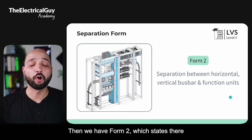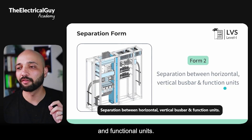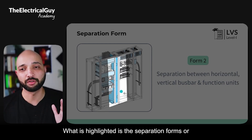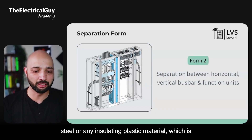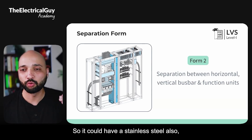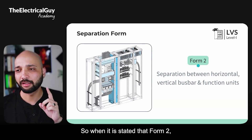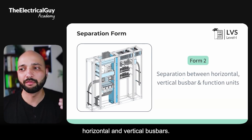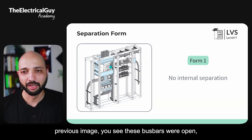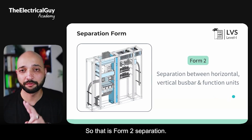Form 2 states there should be a separation between the horizontal and vertical busbars and functional units. The separator material could be sheet steel or insulating plastic material, depending on the type-tested design. You can see the busbars are now covered with the highlighted barriers — compared to Form 1 where the busbars were open, Form 2 covers them. That is Form 2 separation.